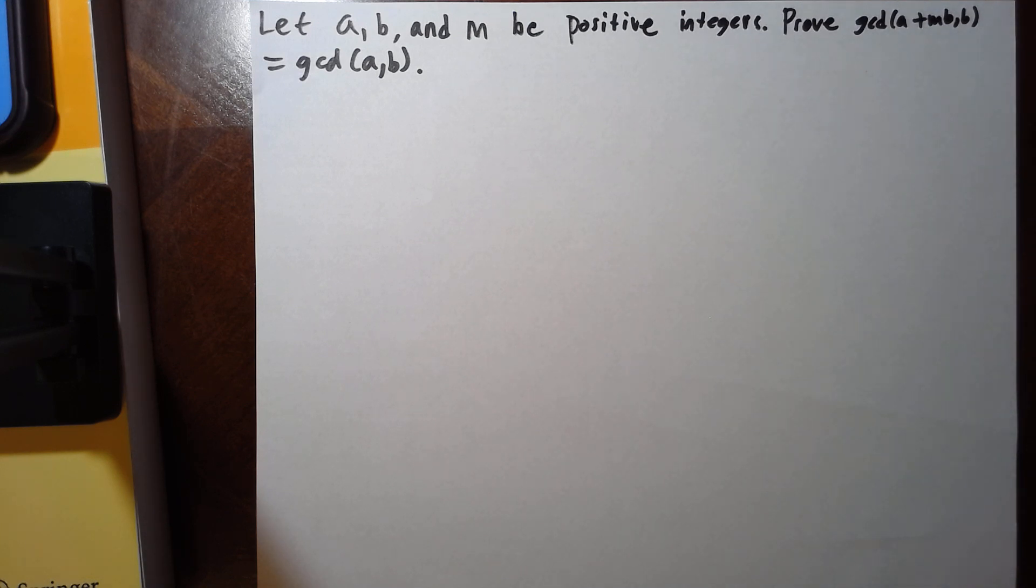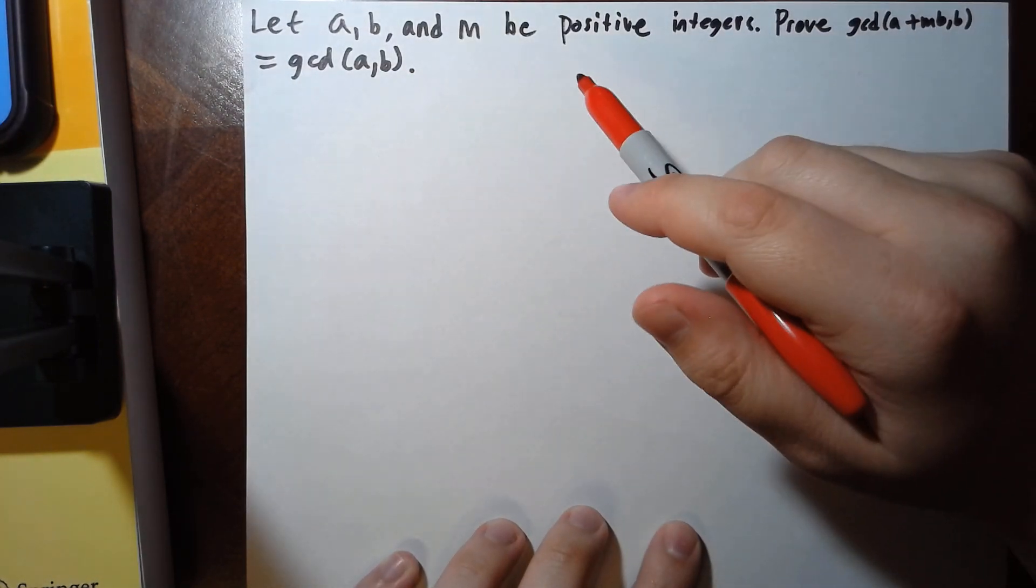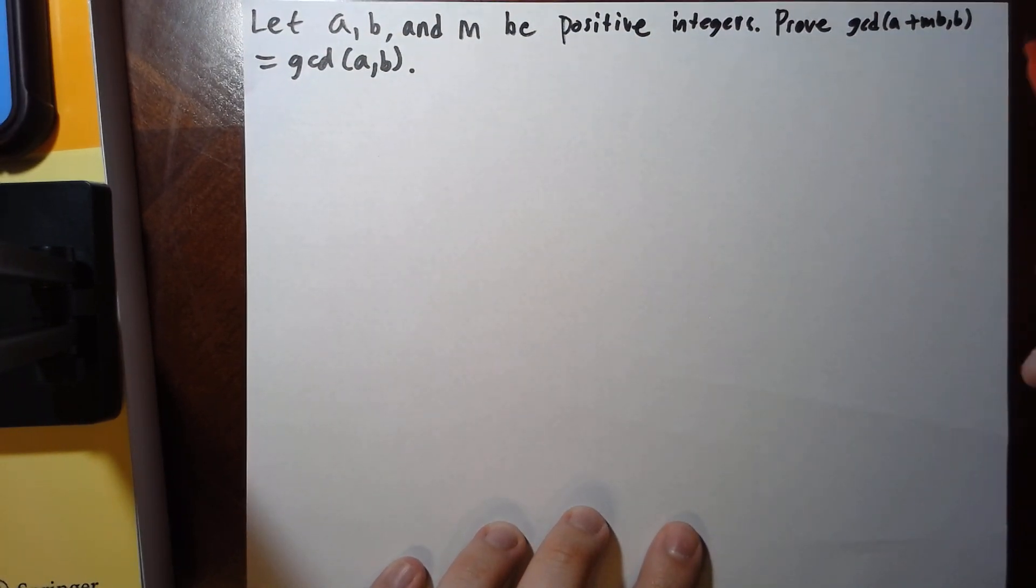Alright, so I have a question here about greatest common divisors. I'm given that a, b, and m are positive integers. I want to show that the greatest common divisor of a plus bm and b is equal to the greatest common divisor of a and b.